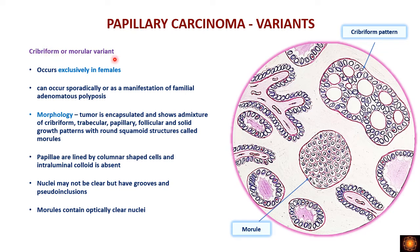The cribriform or morular variant occurs exclusively in females. Morphologically, it can show a papillary pattern, follicular pattern, or cribriform pattern — sieve-like or punched-out rounded spaces between tumor cells. Squamous morules (rounded sheets of squamous cells) are also present. The tumor cells show nuclear features of PTC such as grooving and pseudo-inclusions. This pattern of cribriform arrangement with morules gives it the name cribriform or morular variant.